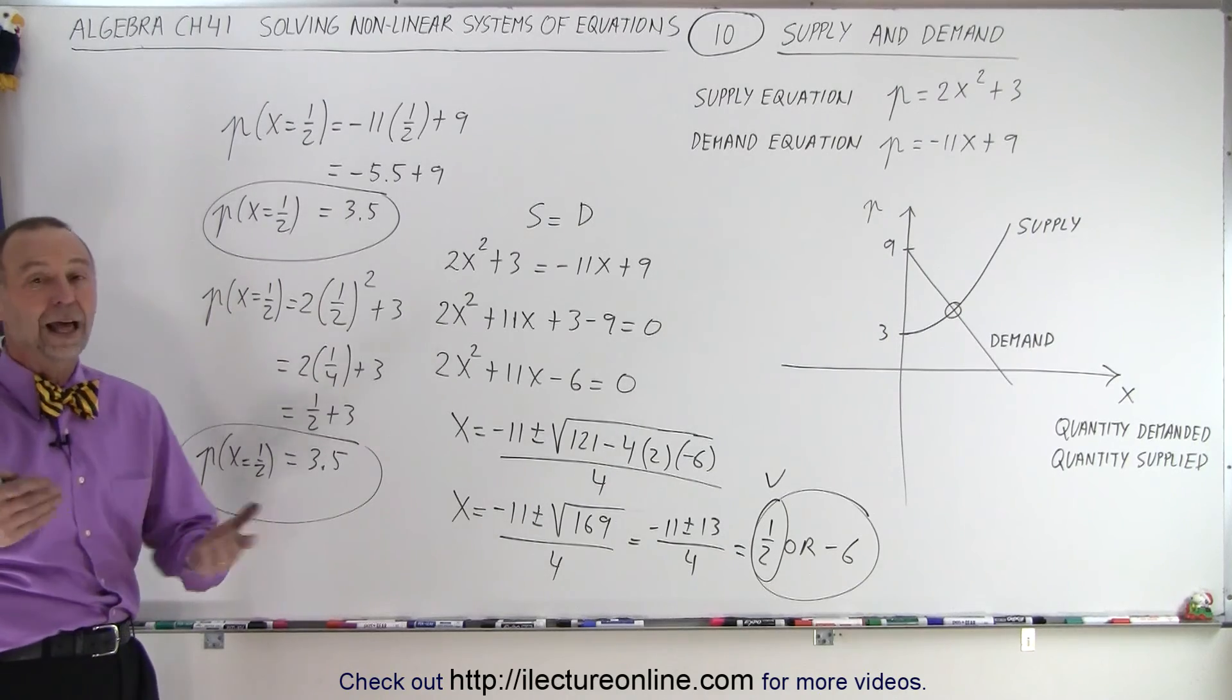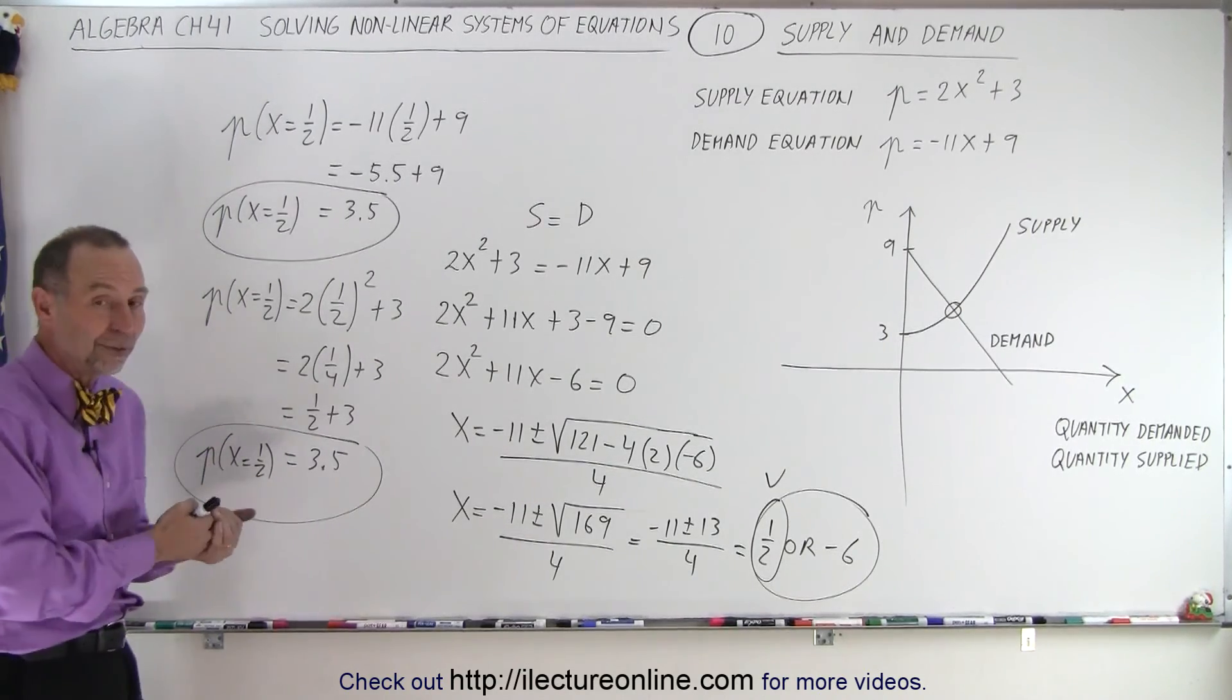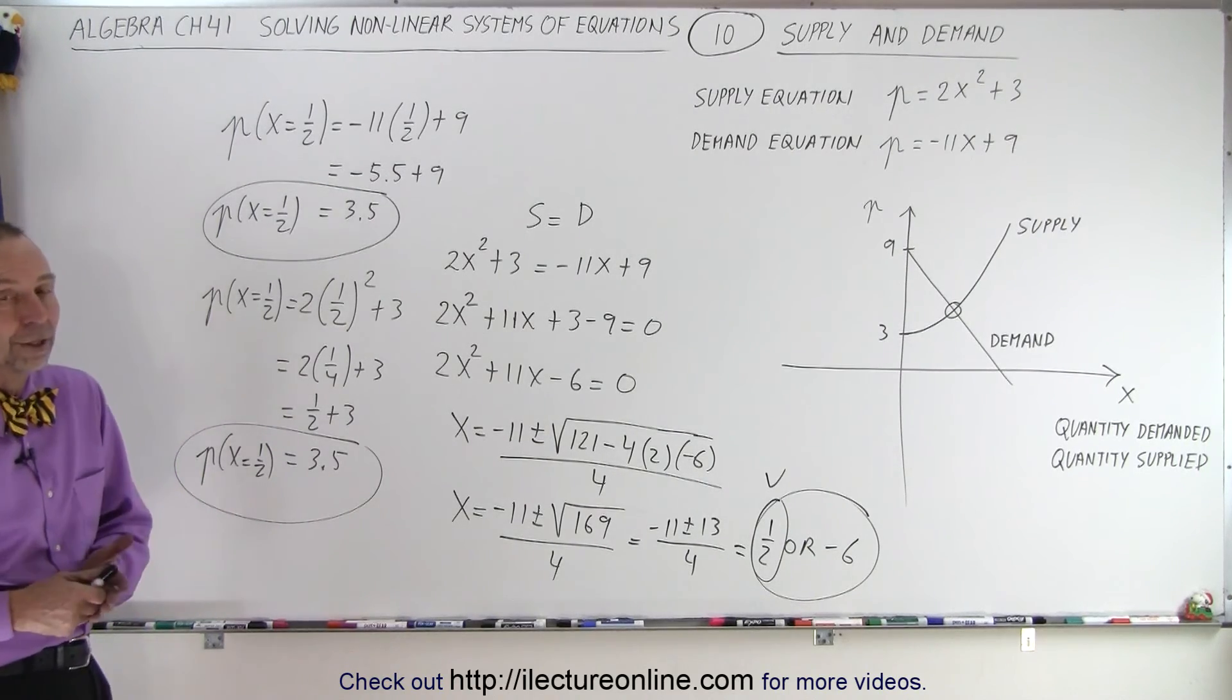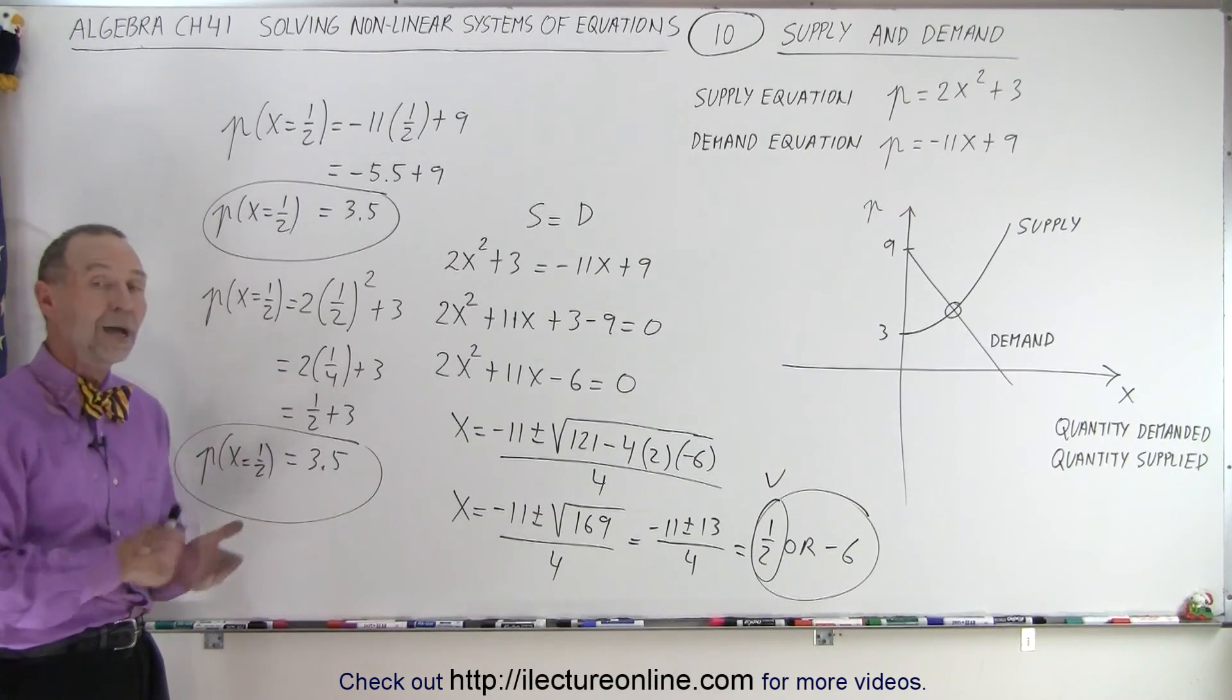Now, of course, you say, how can quantity demanded equal 1 half? Well, the 1 half could represent 1 half of 1,000, 1 half of 1,000, 1 half of whatever. It's just the methodology that was important, and this is how we do that.